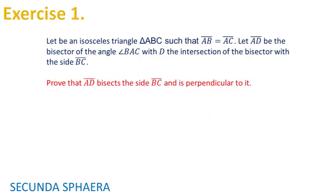Now it is time to start with the problems. I will follow the order as in the video that presented the problems. Hence, for the first problem: let there be an isosceles triangle ABC such that the sides AB and AC are equal. Let the segment AD be the bisector of the angle BAC, with D the intersection of the bisector with the side BC, and it asks to prove that the segment AD bisects the side BC and is perpendicular to it.